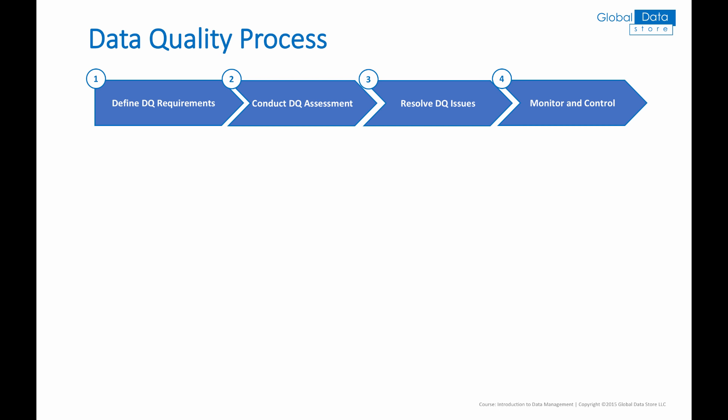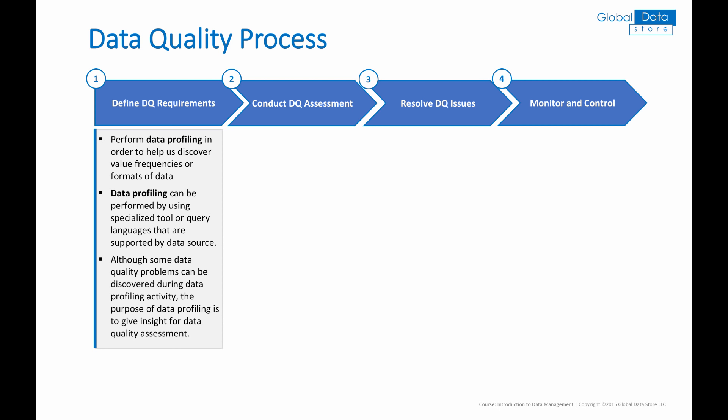The next step is to discuss the data quality process. The data quality process consists of four activities: 1. Define data quality requirements, 2. Conduct data quality assessment, 3. Resolve data quality issues, 4. Monitor and control data quality. Defining data quality requirements begins with performing data profiling, which helps us discover value frequencies and formats of data. Data profiling can be performed using specialized tools or query languages supported by the data source. Although some data quality problems can be discovered during data profiling, its primary purpose is to give insight for data quality assessment.